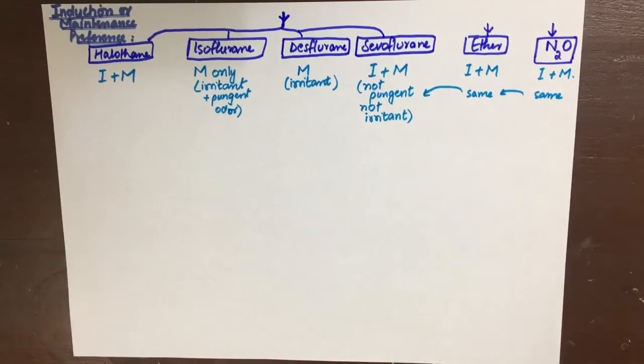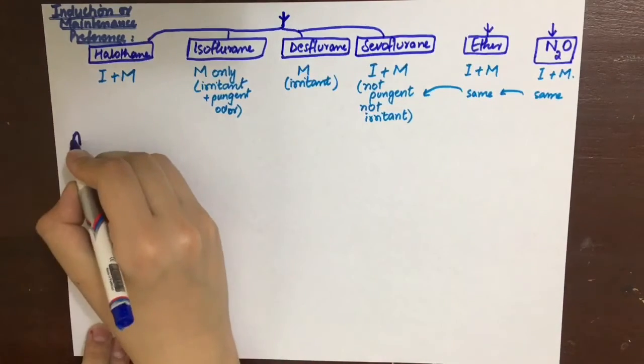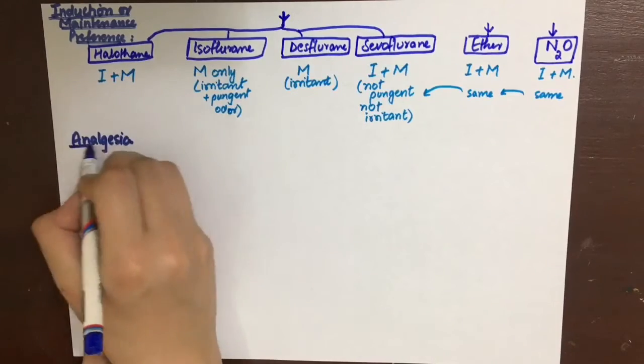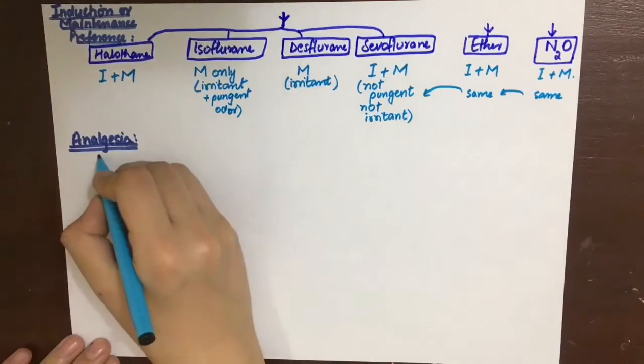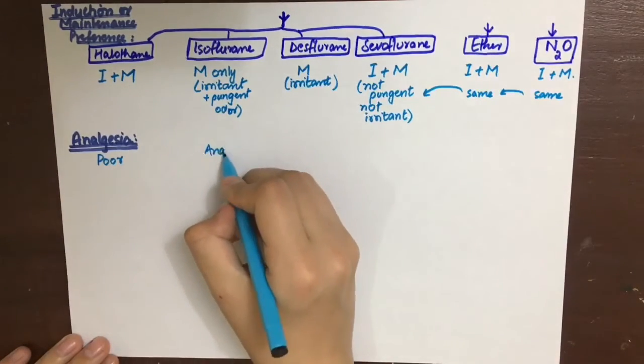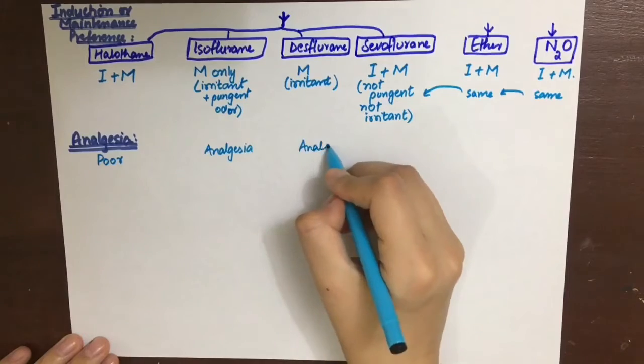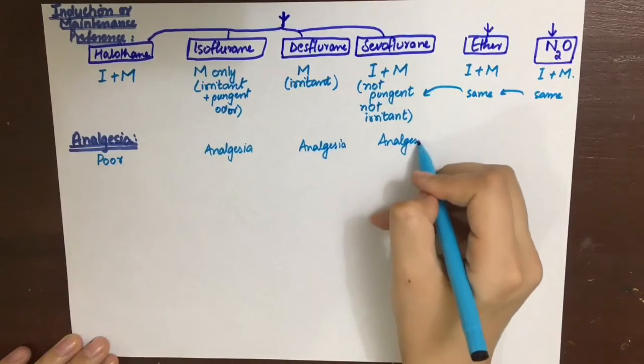Now let's see if these general anesthetics have analgesic properties. Halothane is a poor analgesic. Isoflurane, desflurane, and sevoflurane are good analgesics. While ether and nitrous oxide are excellent analgesics.